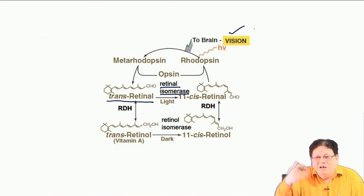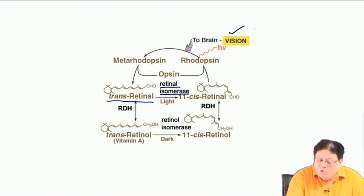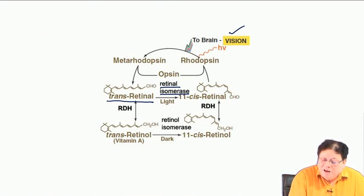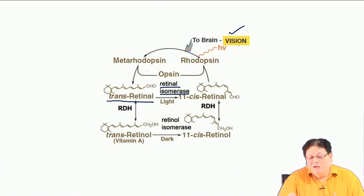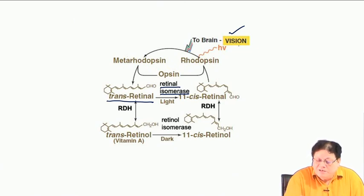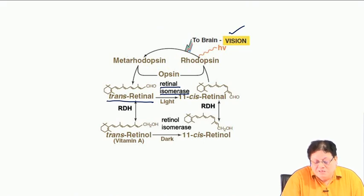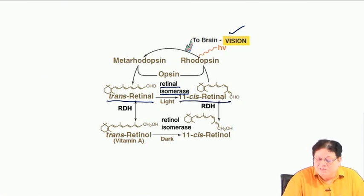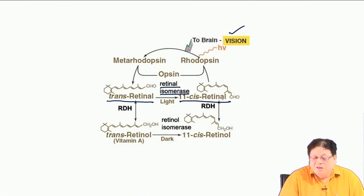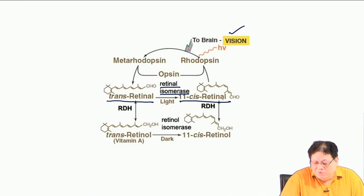To see the next set of images, the rhodopsin is photo-excited and transferred to trans retinal. Trans retinal does not react with the opsin protein, so it is released. Via retinal isomerase it can go back to 11-cis, and then the cis retinal forms rhodopsin again.